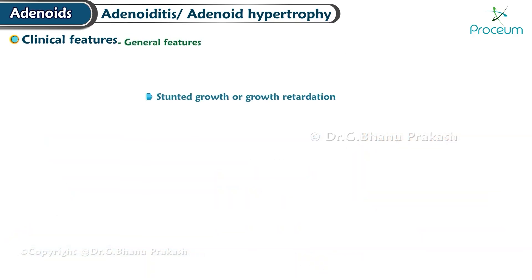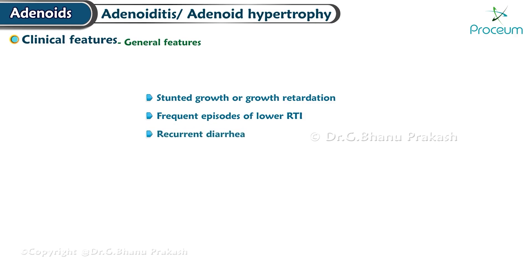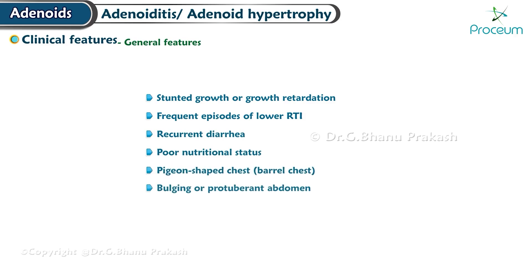Additional adenoid facies features include crowding of teeth particularly in the upper jaw, high arched palate, and hearing loss which can contribute to inattentiveness in children. General features include stunted growth or growth retardation, frequent lower respiratory tract infections, recurrent diarrhea, poor nutritional status, pigeon-shaped or barrel chest, bulging or protuberant abdomen, and enuresis (bedwetting) possibly present or absent.